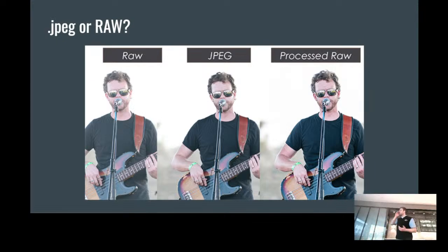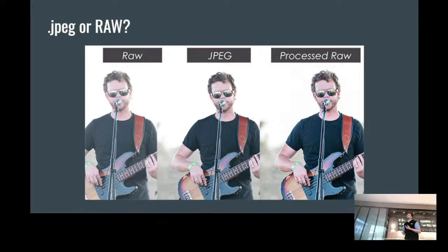When we think about JPEG versus RAW, the primary thing to understand is that when we take a standard picture it's going to come out as a JPEG — that's the standard file format. JPEGs are what we'd call a compressed file, meaning the information inside the file isn't expanded. Therefore detail, saturation, color, hue, your color gamut — your ability to find those finer details — those are all things that are a little bit more flat.